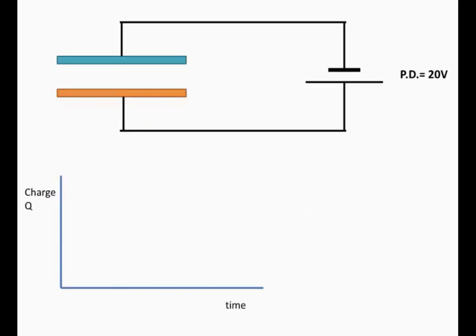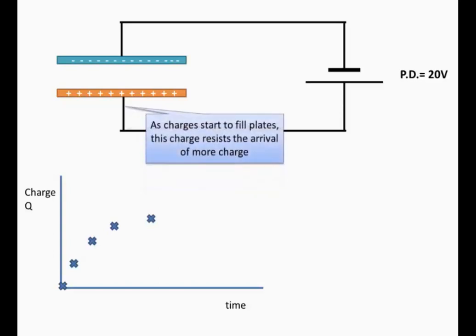Now we look at how the charge changes with time. To start with there is no charge on the plates. Then the charge starts to move onto the plates and increases. We plot a graph of how the charge changes with time. As more charge goes on the charge increases, however it increases at a smaller and smaller rate and the graph typically curves over. As the charge starts to fill the plates, the charge on the plate resists the arrival of more charge.